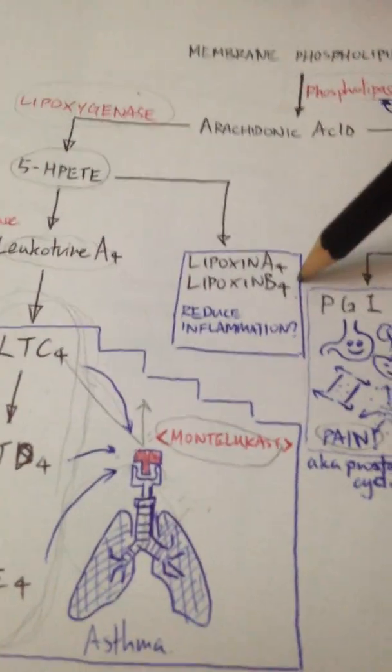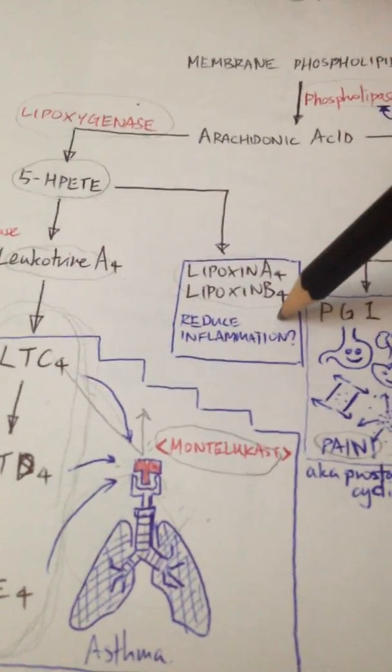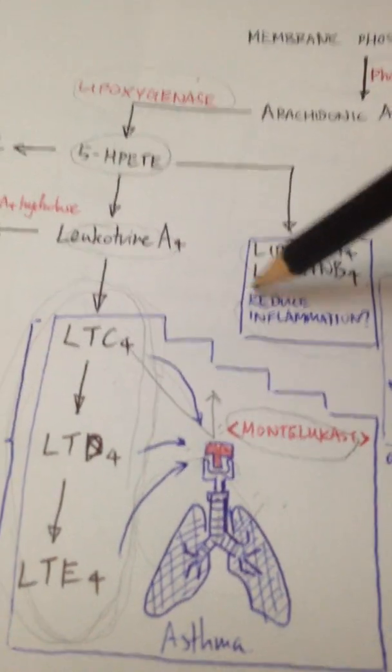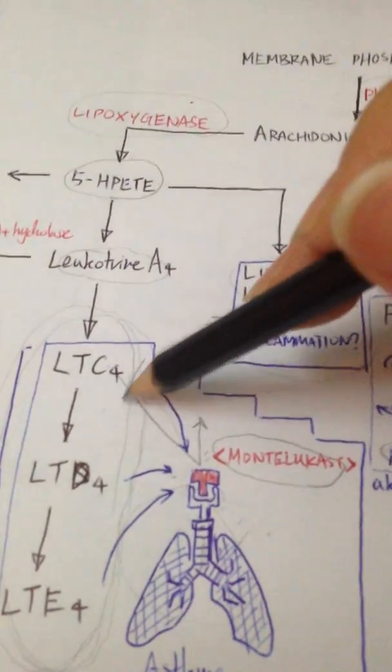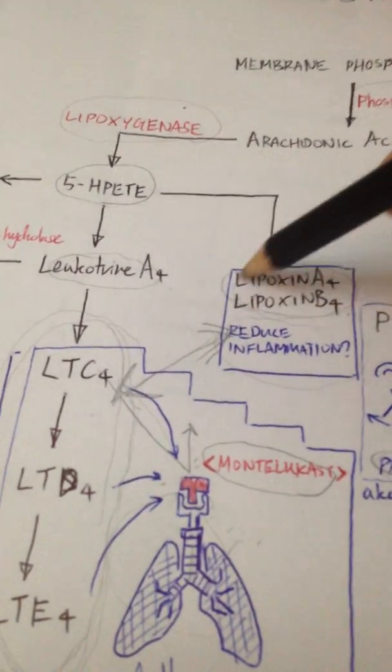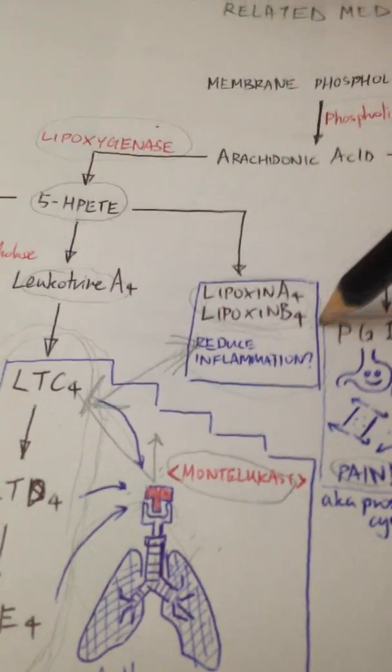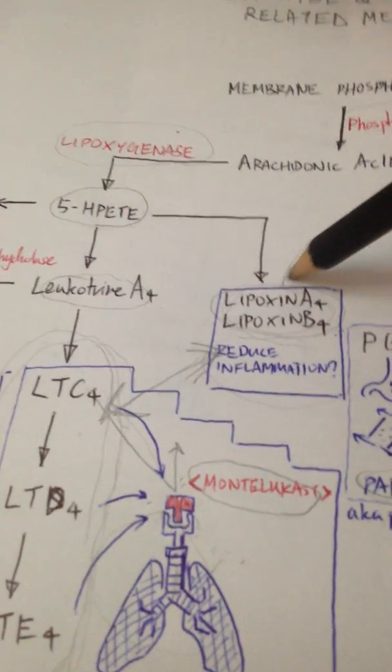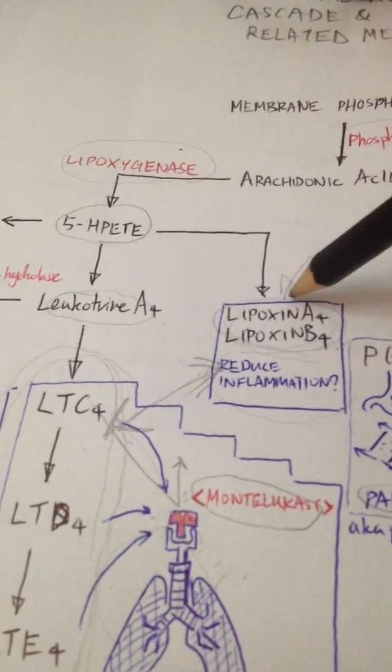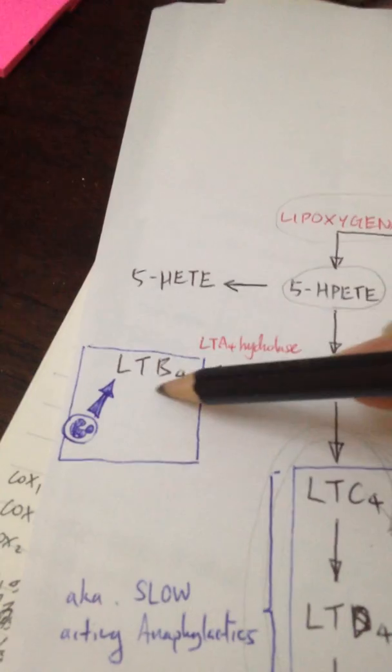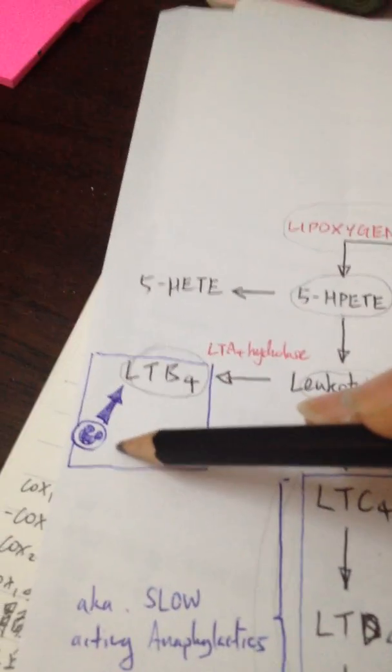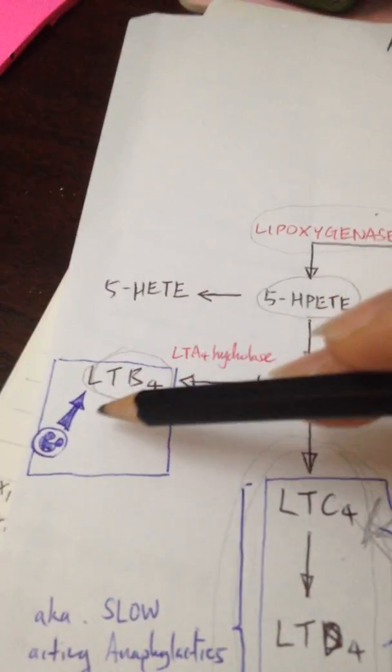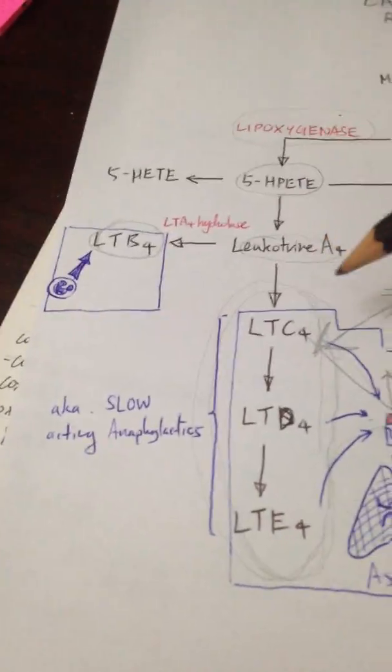I'm going to briefly talk about lipoxin A4 and lipoxin B4. These are thought to reduce inflammation, especially the action of leukotrienes, so we can say these are sort of opposites of each other. But we don't know much about lipoxin A and lipoxin B. People are trying to find out a lot, so maybe there will be drugs that are going to act on the lipoxin. I'm going to talk very briefly about leukotriene B4. This is a very potent chemotactic agent, so it also contributes to inflammation.